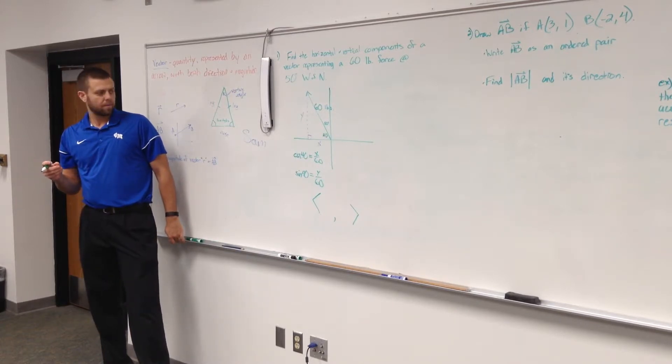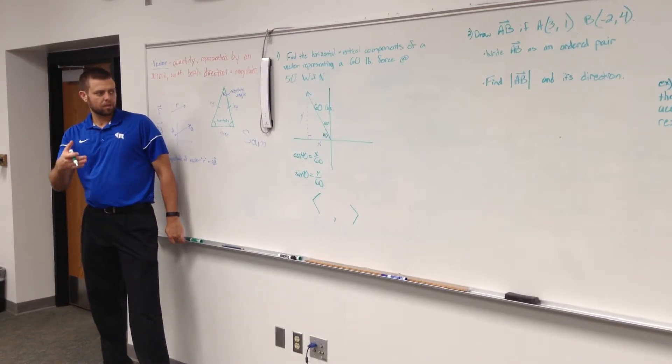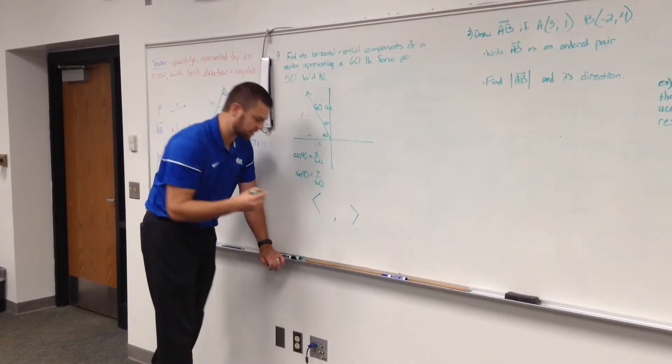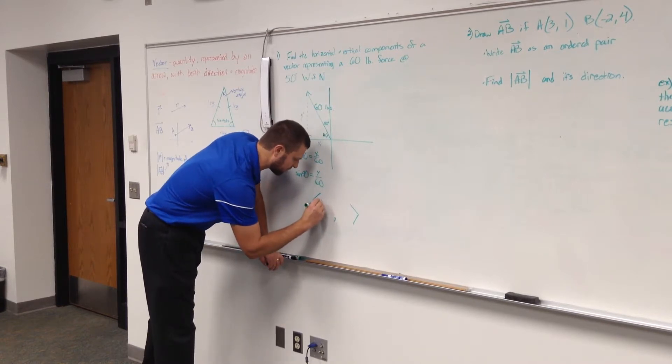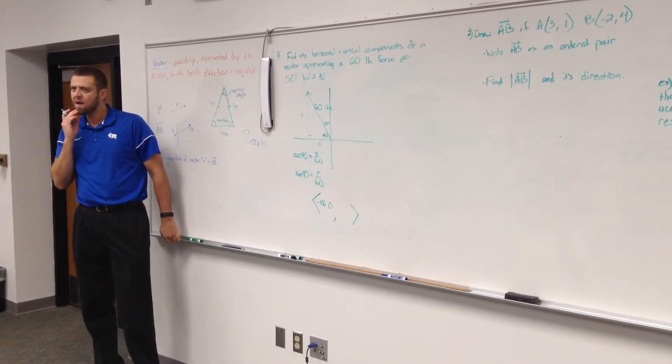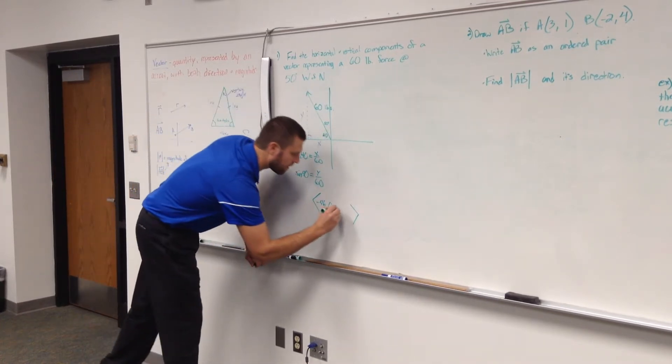X is 45.96. So negative 45.96, so actually I'm just going to go negative 46.0 to the nearest tenth. And how about y? 38.6.